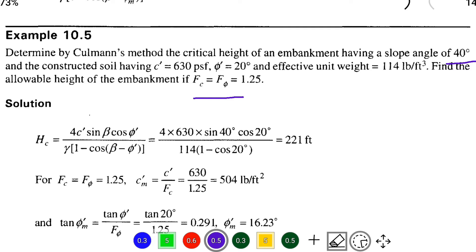The formula for critical height H_c equals 4 C' sin β cos φ' divided by γ times 1 minus cos(β minus φ'). From that formula we can substitute all the values.